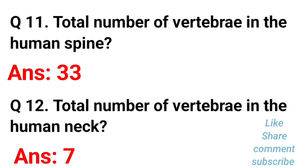The total number of vertebrae in the human spine is 33. The total number of vertebrae in the human neck is 7.